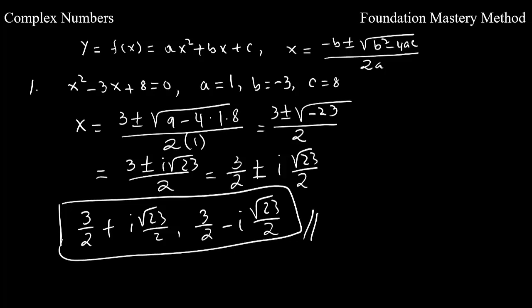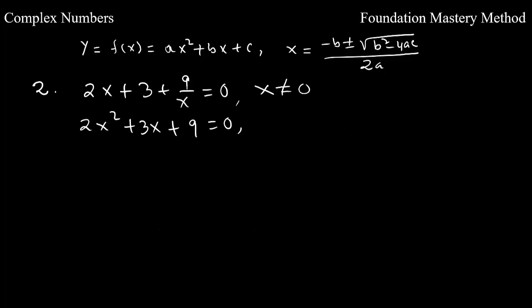These are the complex solutions for this quadratic equation. Now we are taking a second example. We have the equation 2x + 3 + 9/x = 0, where x ≠ 0. This is not exactly of the standard form, but if we multiply throughout by x, we get 2x² + 3x + 9 = 0, which is now in the standard form.